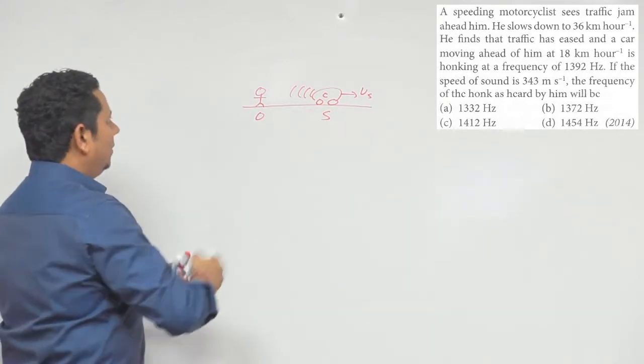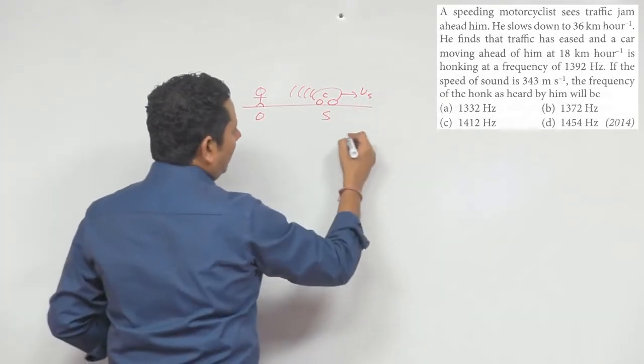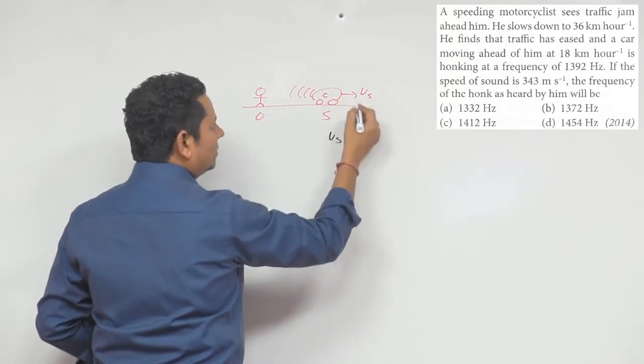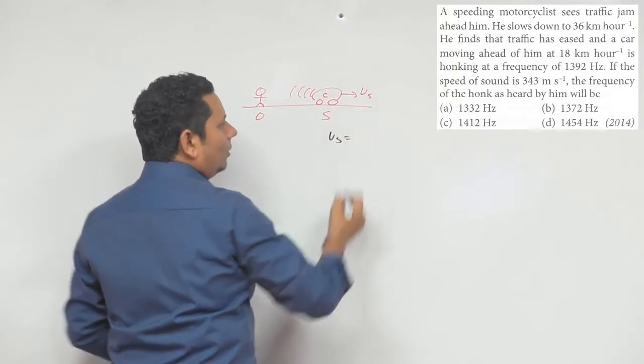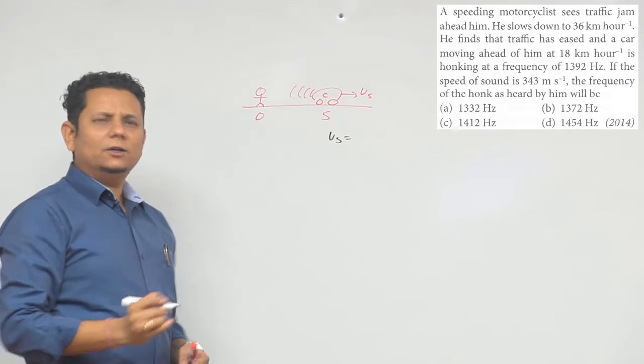Now, what's given here: Vs, the velocity of source or velocity of car, is given as 18 kilometer per hour.